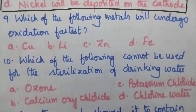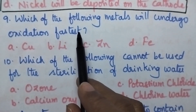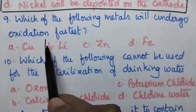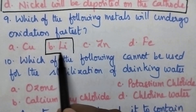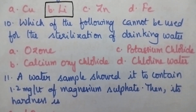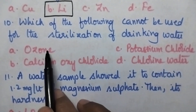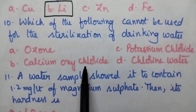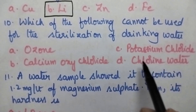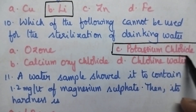Which of the following metals undergoes oxidation fastest? In the electrochemical series, lithium occupies the top position and hence undergoes oxidation most readily, so option B is the right answer. Ozone, calcium oxychloride (bleaching powder), and chlorine can be used for sterilizing drinking water, but option D — potassium chloride — will not be used for sterilization.